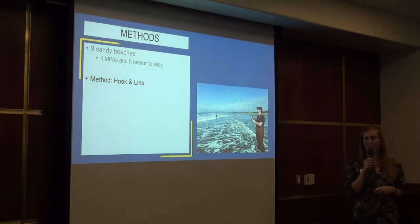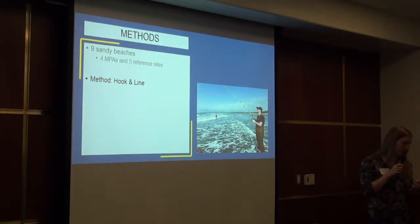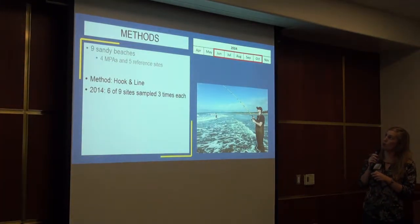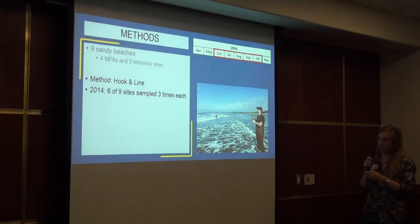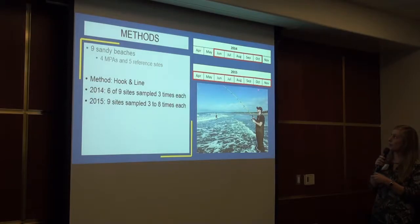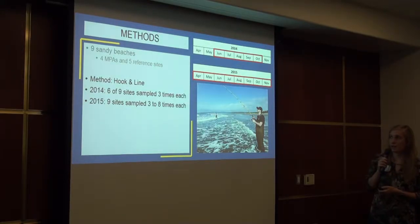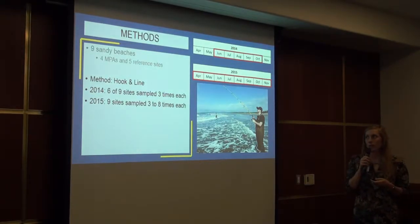For collecting fish, we went out on the beach and fished with hook and line — casting out into the surf zone and trying to catch fish. In 2014, we sampled six of the nine sites between June and October, each sampled three times; three sites had not yet been added to the study. In 2015, we sampled all nine sites three to eight times each between April and November, adding more months to get a better picture of abundance over the year. The variability in sampling frequency was due to site accessibility and weather conditions.